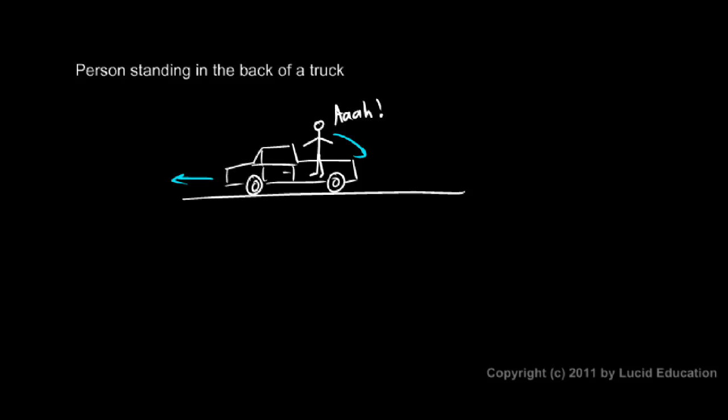Now what's going on here in this situation? The person doesn't actually fall backward. What happens is the person really tends to remain still. But the person's feet are sitting on the bottom of the truck, and typically you have some shoes, or even if you're barefoot, there's some friction there, there's some grip between the feet and the floor of the truck. So when the truck moves forward, the person's feet get pulled forward.